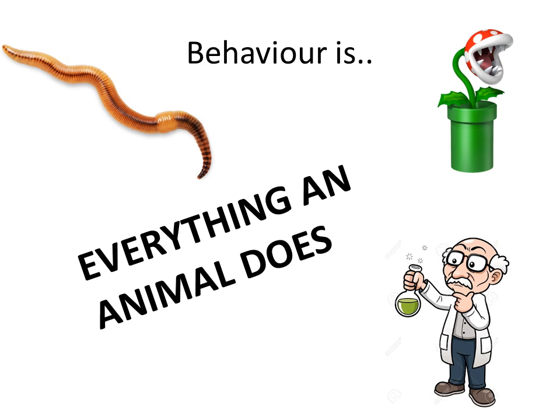A worm crawling through the soil is behavior because the worm is an animal that does something — that's what we call behavior. A scientist in the bottom right corner here, looking at a bottle or a flask — that is also behavior.